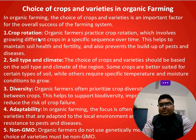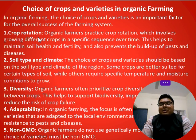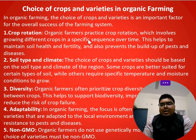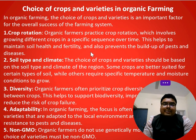Crop rotation — you all know we call it 'fasal chakra.' In crop rotation, the name itself indicates that crops are rotated year-wise. Organic farmers practice crop rotation, which involves growing different crops in a specific sequence over time.